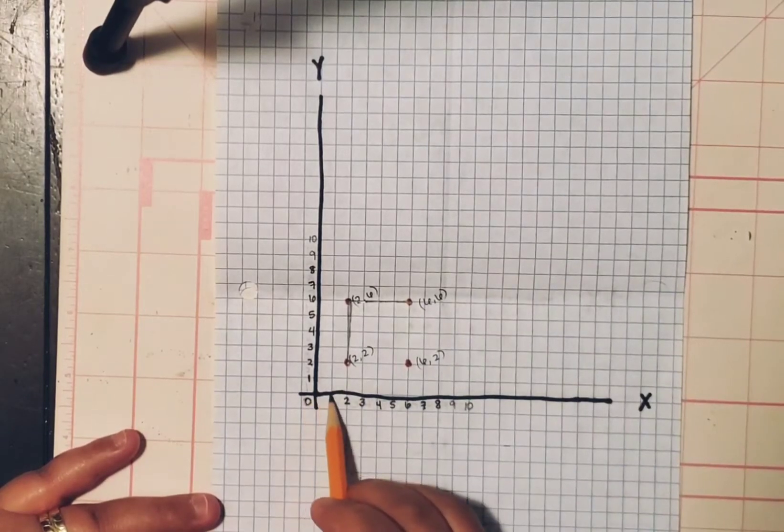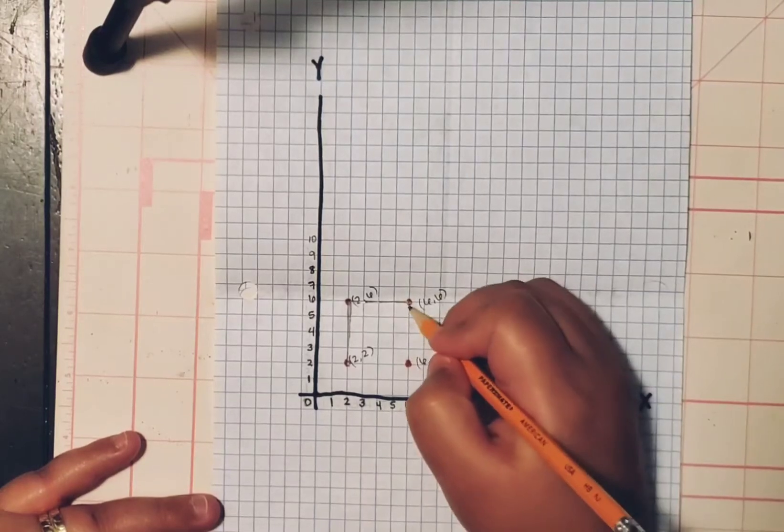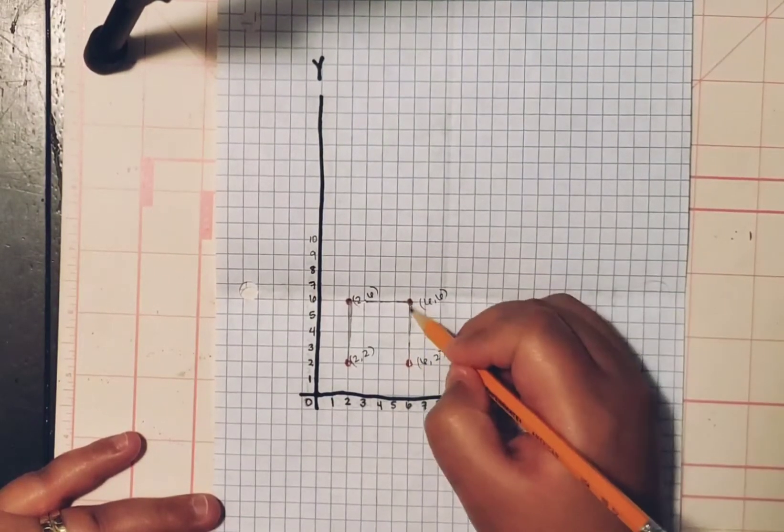And let's plot those in. Last one. We move six to the right. And we go up two. So that's when you plot it. And then attach.